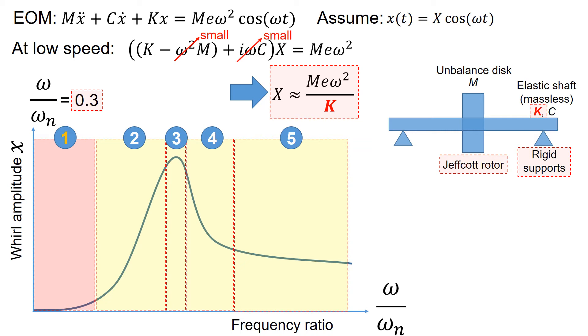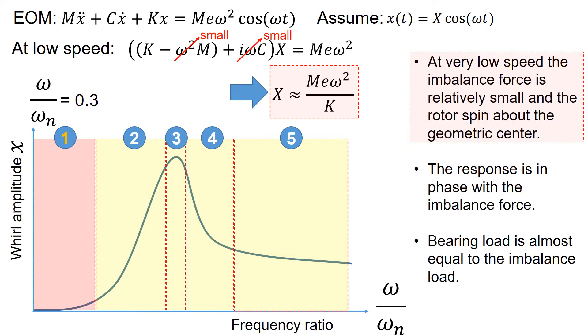In reality, you could also soften up the bearing support to isolate the rotor motion from the housing. At this condition where running speed is low with respect to the natural frequency, the imbalance force is relatively small and the rotor spins about the geometrical center.